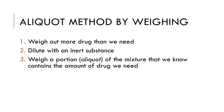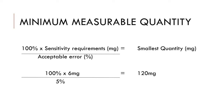There are three main steps in the aliquot method by weighing. First, we weigh out more of the drug than we need. Then we dilute it with an inert substance. Finally, we weigh out a portion or an aliquot of that mixture that we know contains the amount of drug that we need. In order to set up an aliquot parts by weighing problem, you would need to know the minimum measurable quantity for the balance that you're using — the smallest amount of a substance that your balance can weigh out with the level of accuracy that you want.